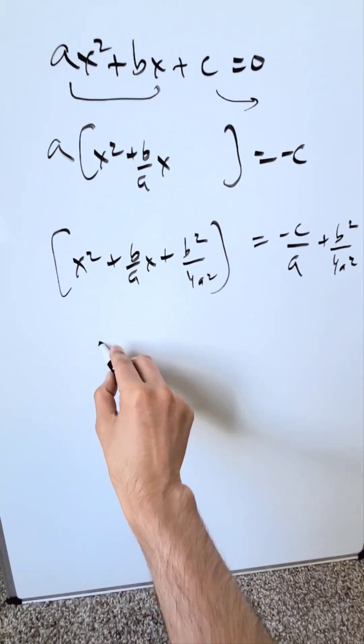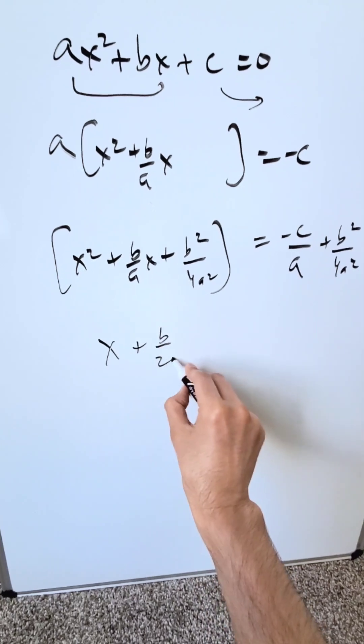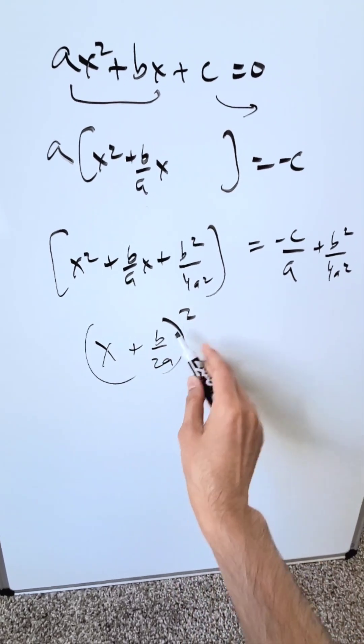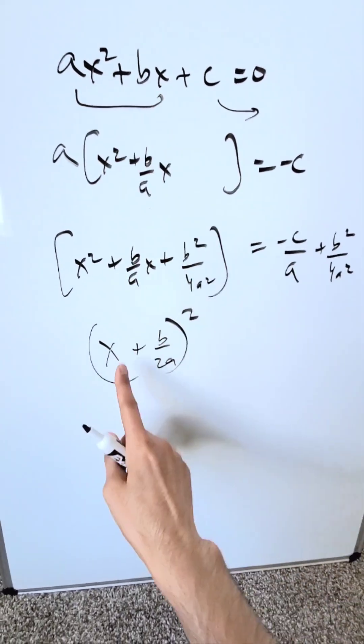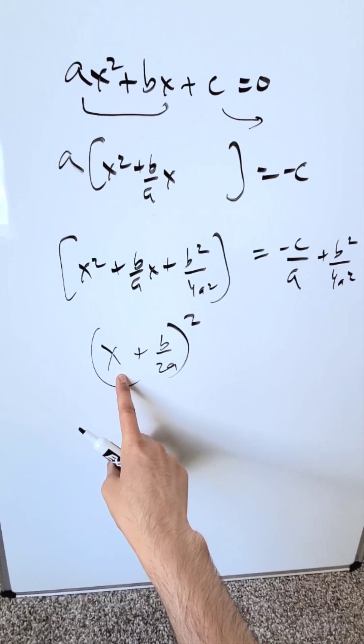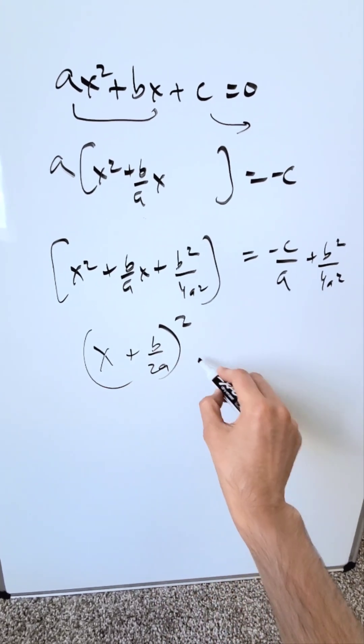Bring this into a better term. You have x plus b over 2a whole squared. Now you're seeing we've gotten rid of two x's. We're down to a single x. It's easier to solve for x from here and derive the quadratic formula.